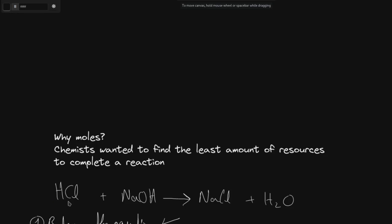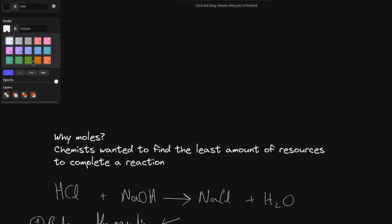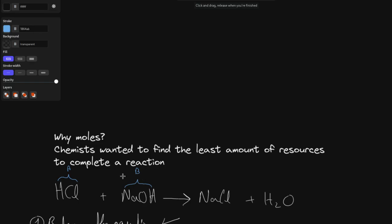So how would we figure that out? They already knew some specific things. For example, take the reaction HCl + NaOH giving us NaCl and H₂O. This is a very simple reaction and the key point is that we have two particles reacting together. How do we figure out the perfect amount of HCl and NaOH so that we get a specific amount of NaCl and use up all of it — completely consuming both reactants?